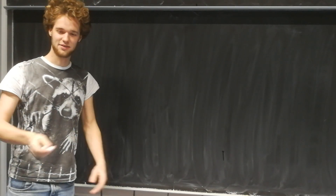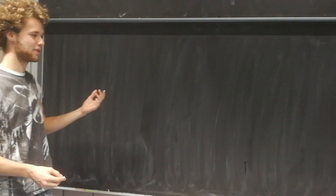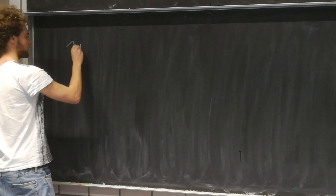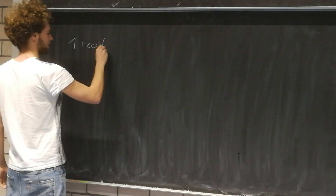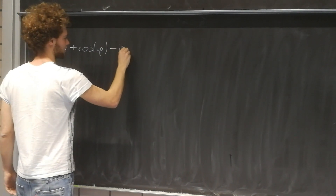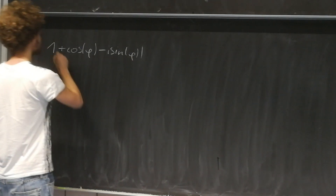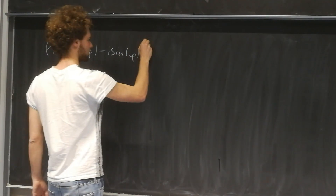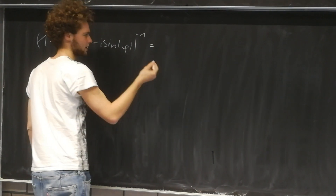Welcome back my little freshmen. Today I'm going to calculate a nice complex number for you. The number is 1 plus cosine of phi minus i sine of phi. And because that's too easy, we'll just put it in the denominator.